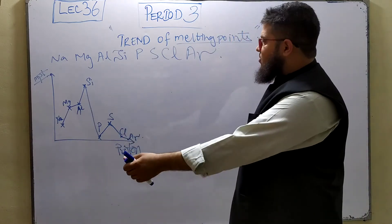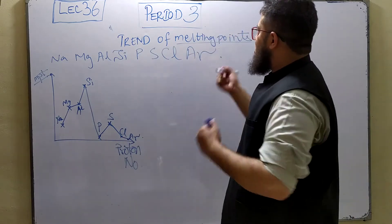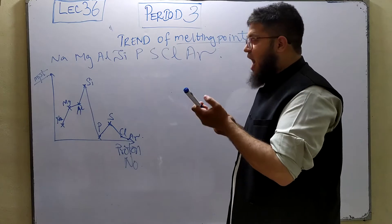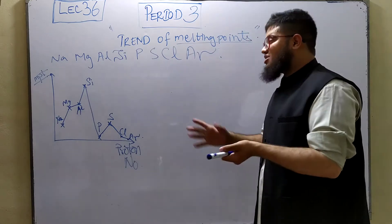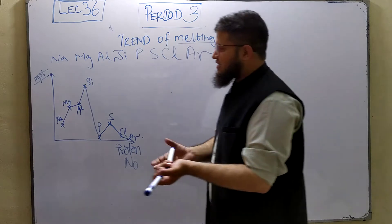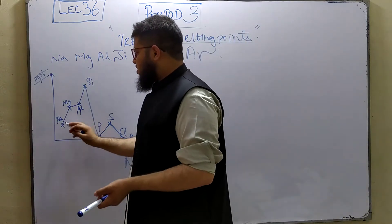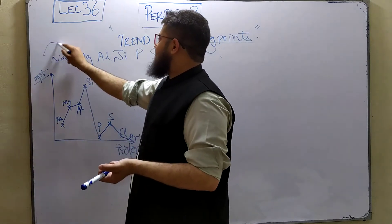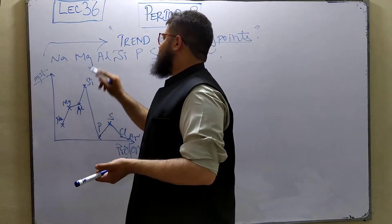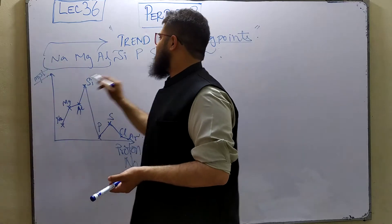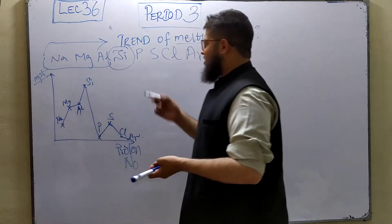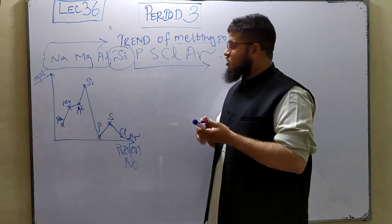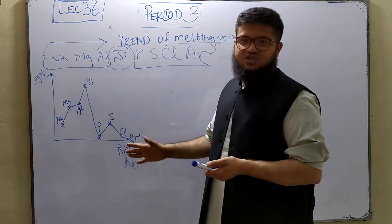Sodium, magnesium, aluminum, silicon, phosphorus, sulfur, chlorine, and argon — which of these will have the highest melting point and why? That's basically the question: describe and explain the trend of melting points. The section from sodium to aluminum is one part, silicon itself is a question, phosphorus through argon is a separate question, and the fourth question is to actually draw this diagram.